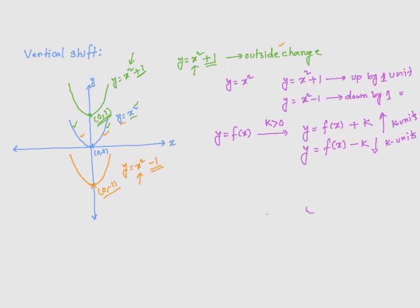Now, once again, this adding or subtracting k is an outside change. This is not an inside change. Outside change makes the function move vertically. Either makes it go up or go down, depending on what you are adding or subtracting.